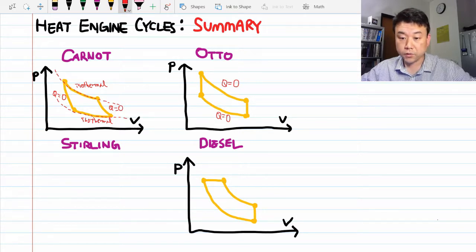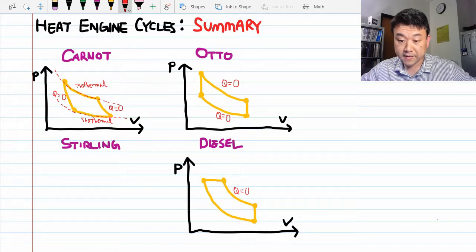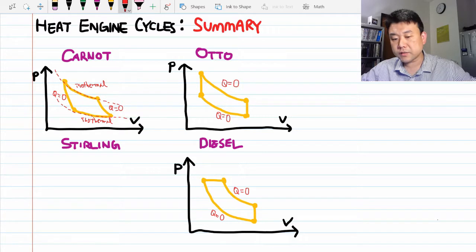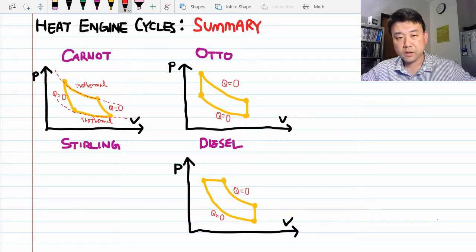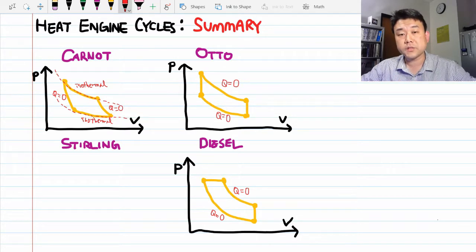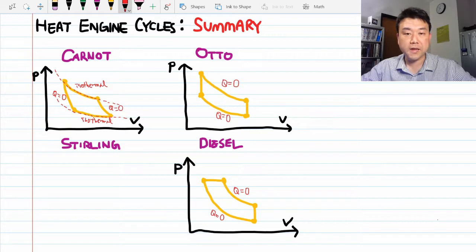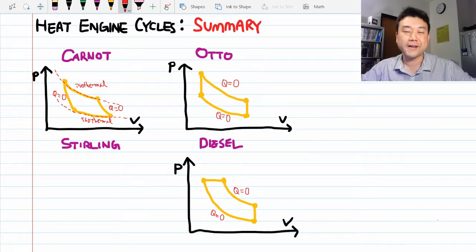The isobaric and isochoric processes are clear, and the remaining curves are adiabatic curves. There's a reason all these curves in the internal combustion engine are adiabatic: in an internal combustion engine, there's no real thermal reservoir. The source of heat is the ignition of the fuel-air mixture within the engine, and expelling the waste happens by expelling the gas and taking in new air.